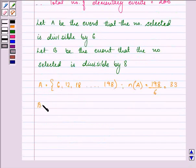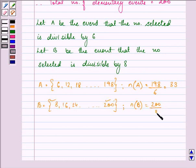Similarly, B has elements as 8, 16, 24 and so on till 200. So, number of elements in set B are equal to 200 divided by 8, that is equal to 25.